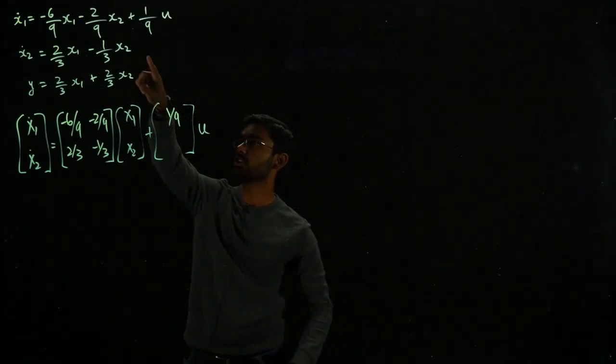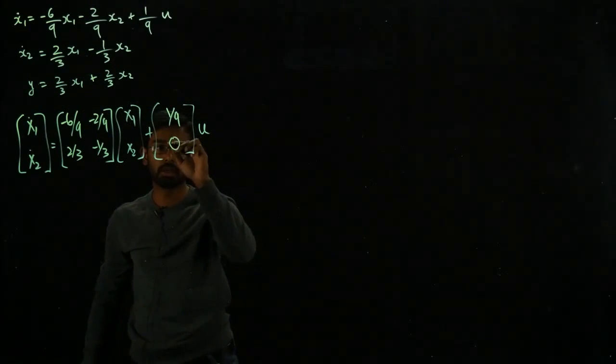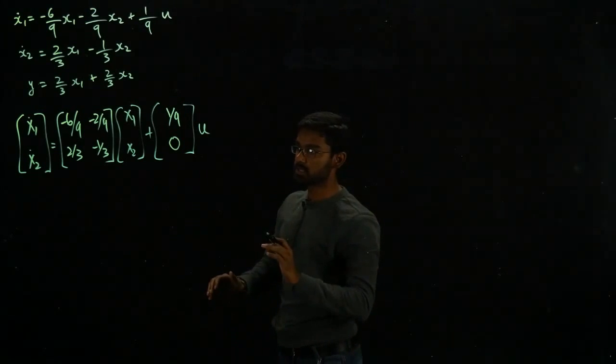x₂'s evolution is described by x₂ dot and it's not going to depend on u so I'm just going to simply plug in zero here. So I have the state space equation now.